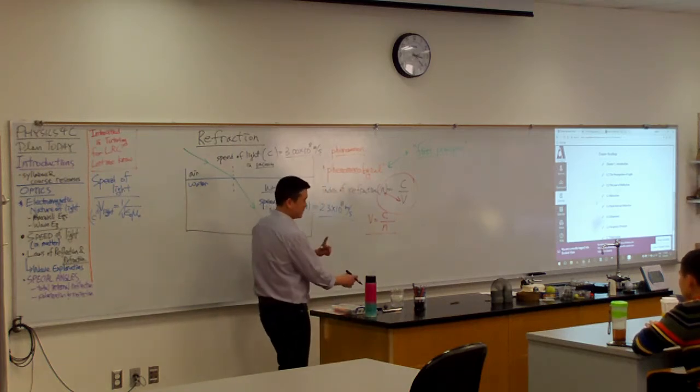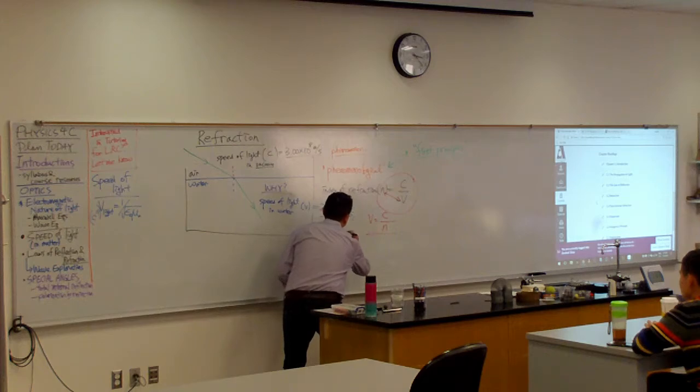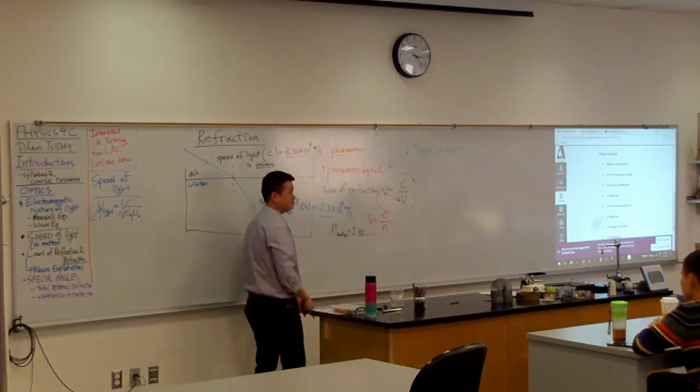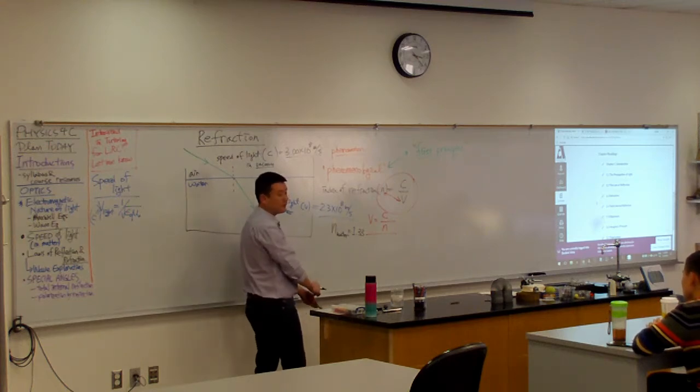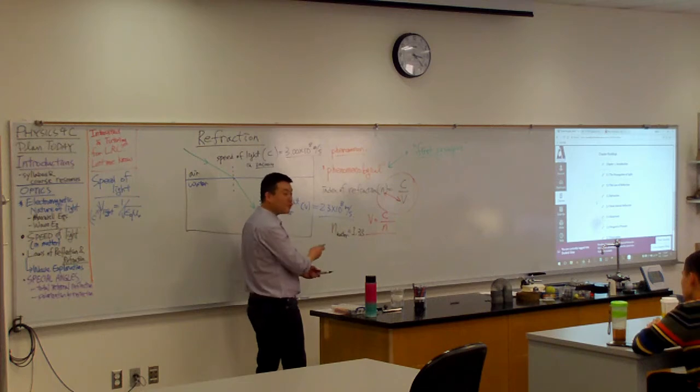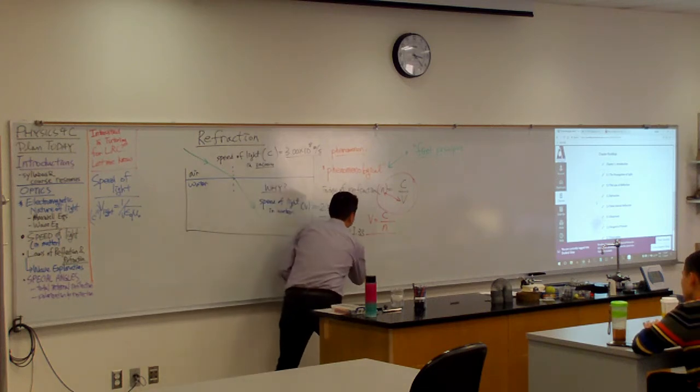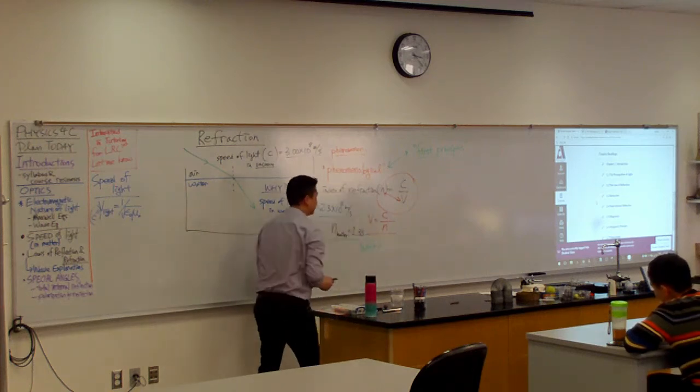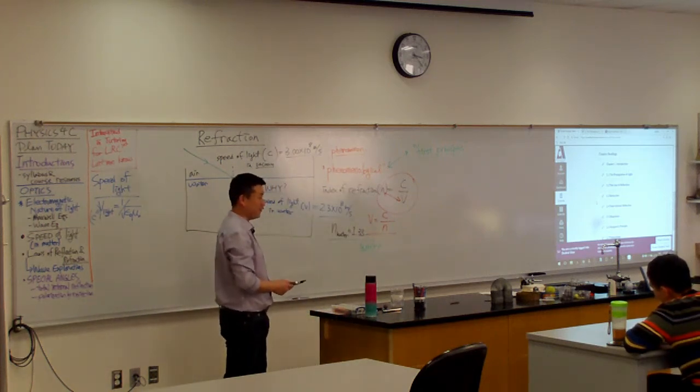Once you know it's an easy number to memorize. N of water is approximately 1.33. You can put one more three there, but that's already three significant figures. So after you've given all that, imagine that your younger sibling once again asks you, why, why is the index of refraction of water 1.33?